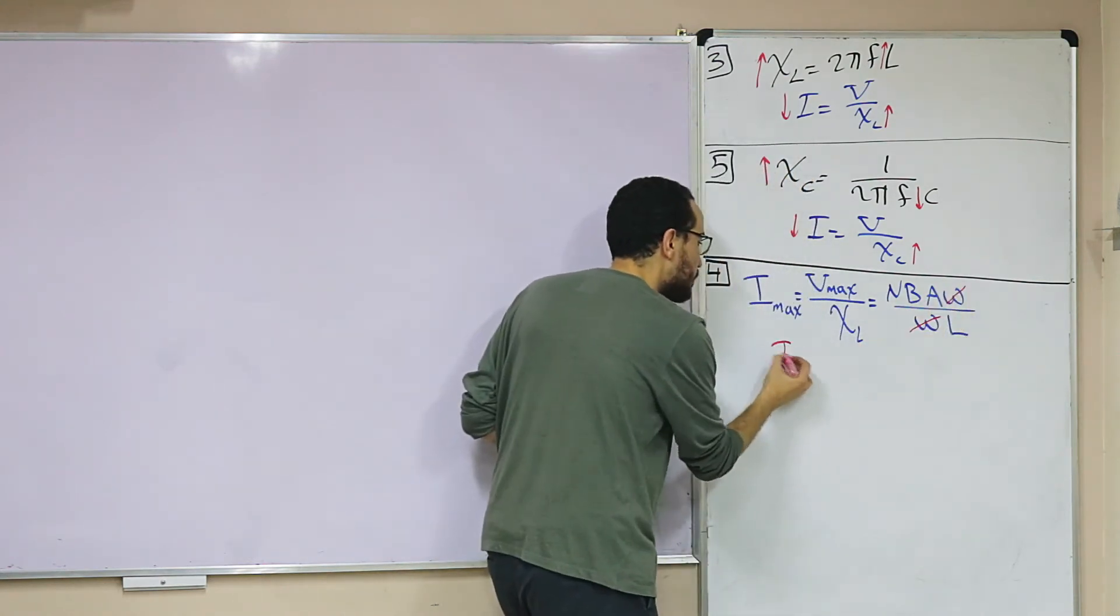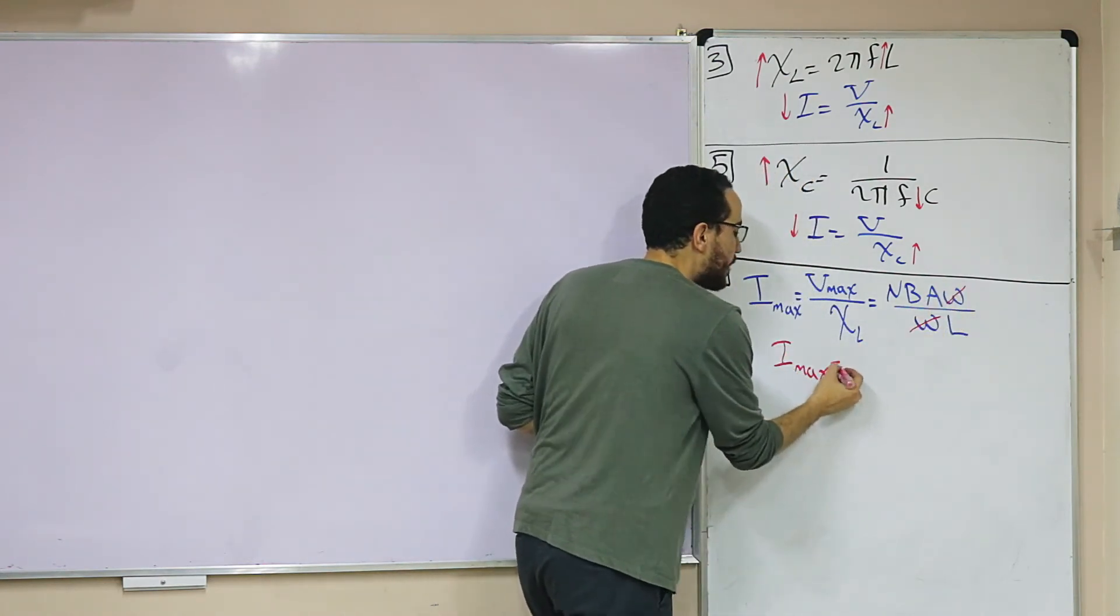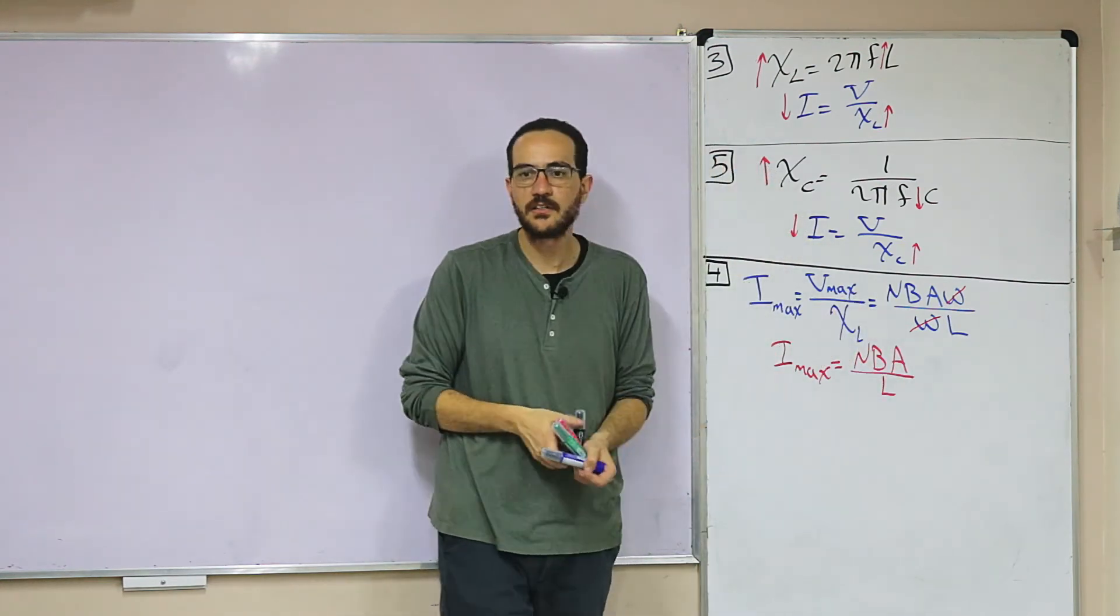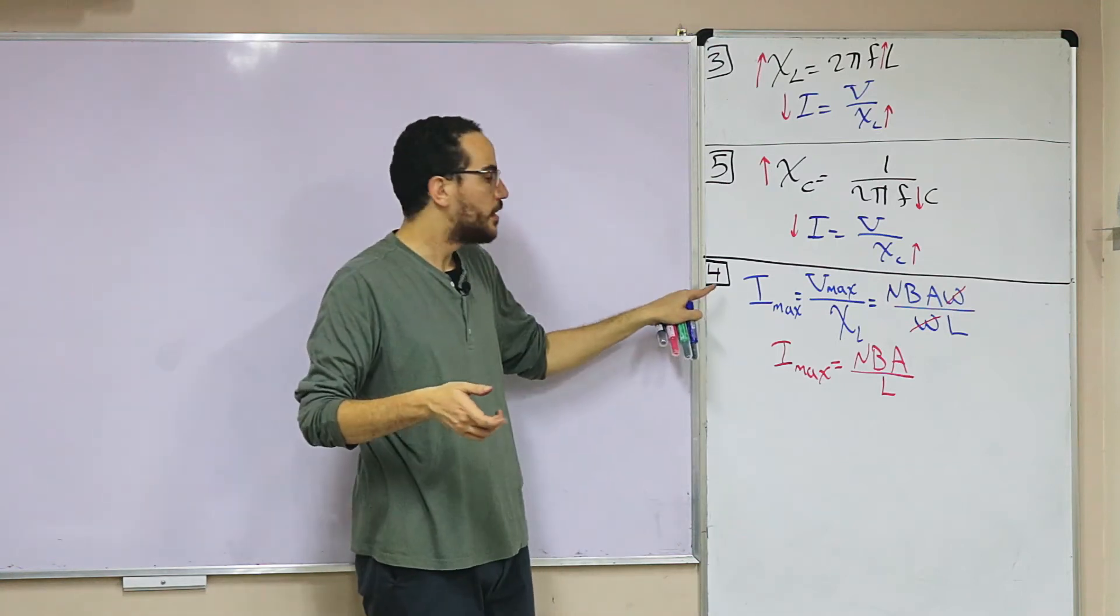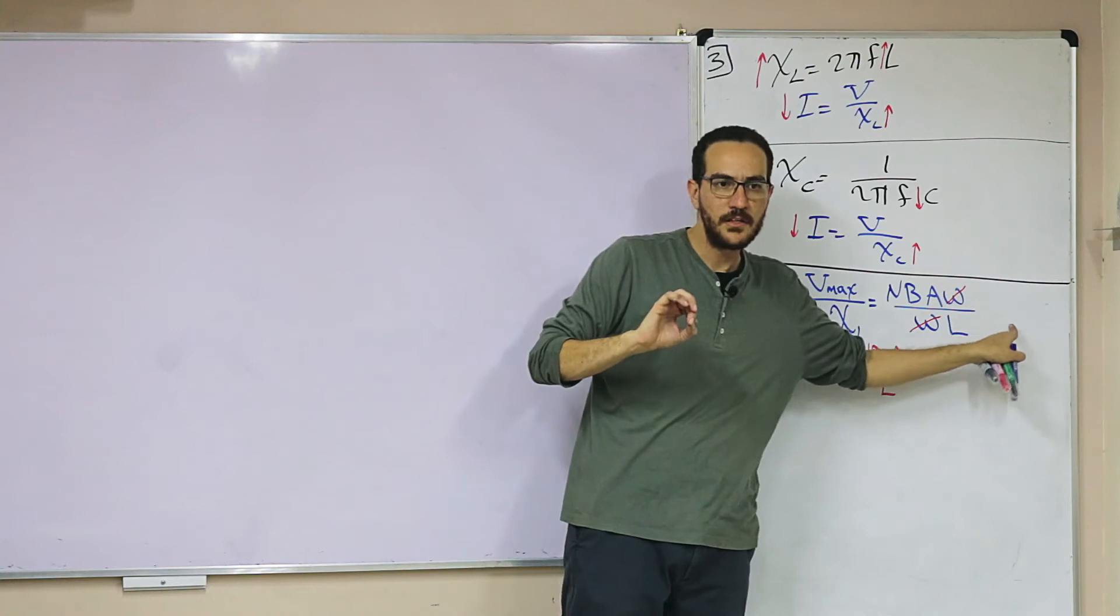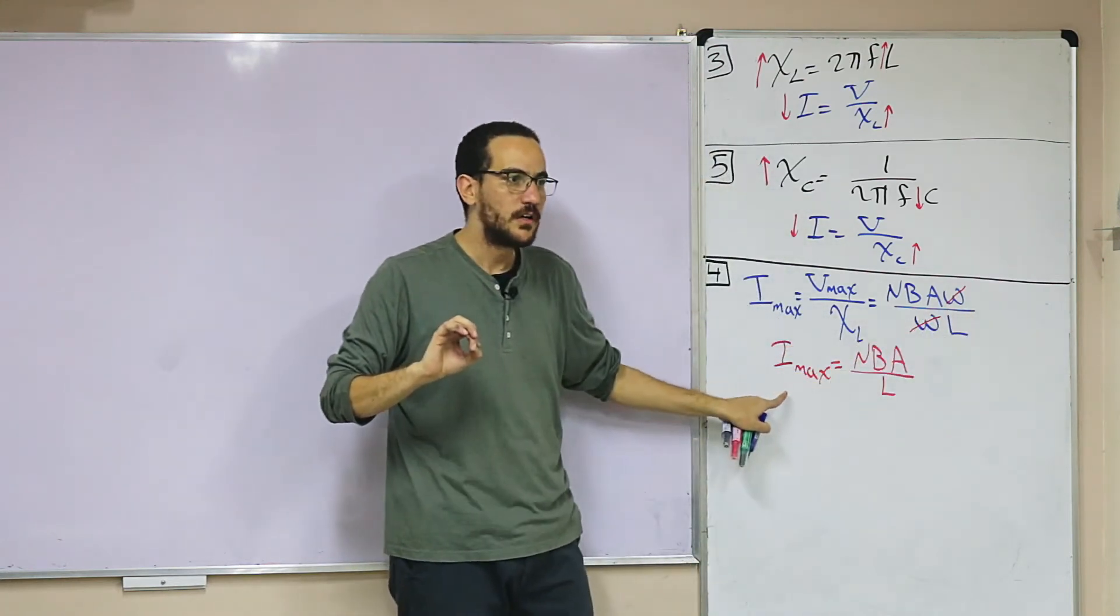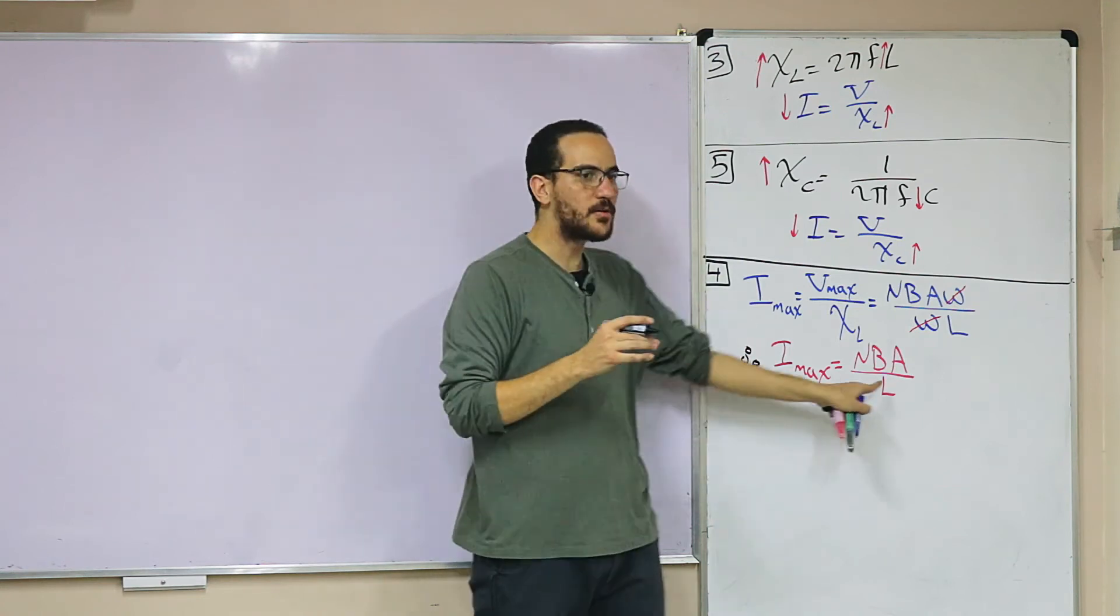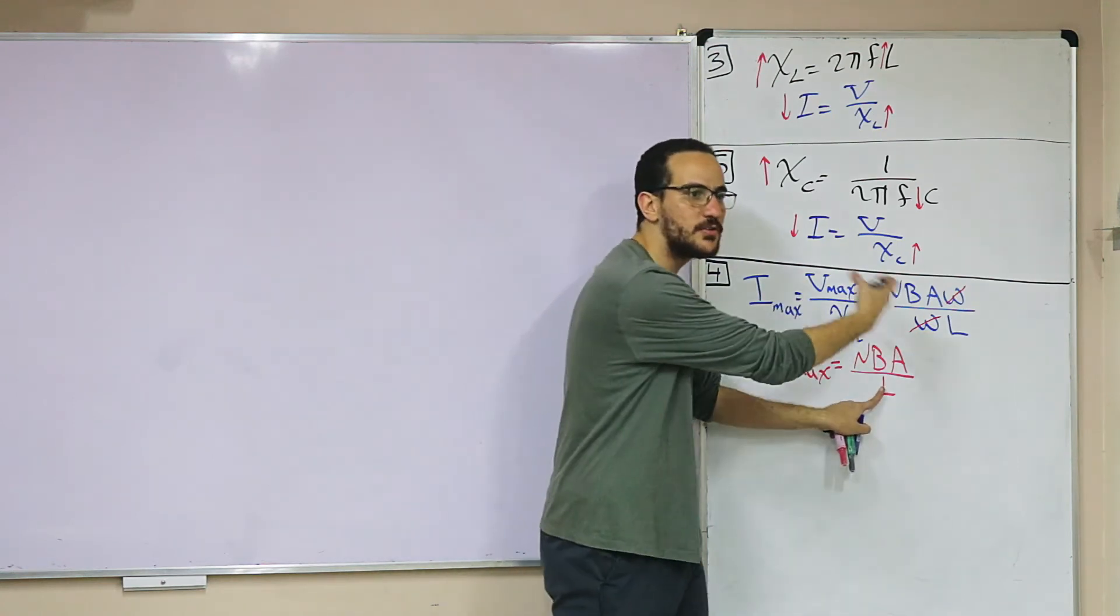Because the current is equal to NBA over L. The answer is in the equation. I will say because the current in this case is given by this equation. Therefore, the I maximum is equal, which is not dependent on the speed of rotation.